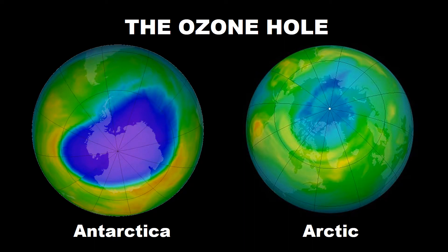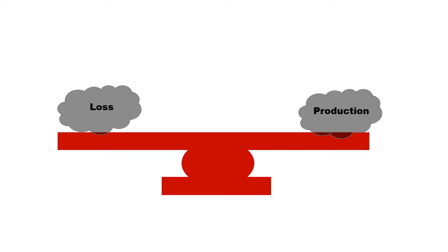The ozone layer is being broken down by industrially produced chlorine and bromine containing compounds, and this has led to the formation of an ozone hole over the Antarctic and a smaller ozone hole over the Arctic. The natural cycles of ozone loss and production are balanced; however, this can be impacted by human emissions of CFCs and other ozone depleting substances.